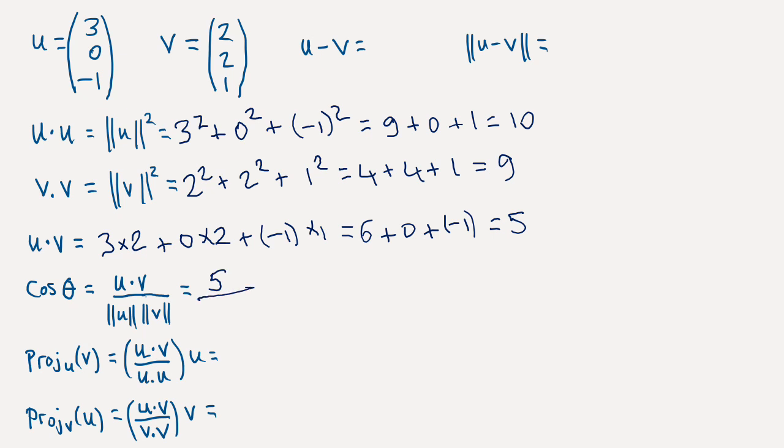And the norm of u is the square root of 10. And the norm of v is the square root of 9. Notice I'm using the word norm and length interchangeably here. They mean the same thing in this context.